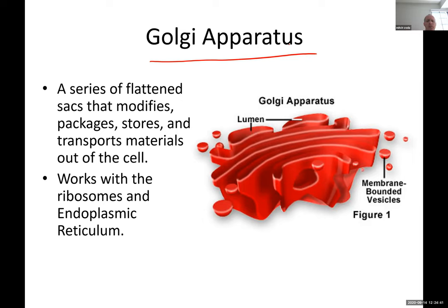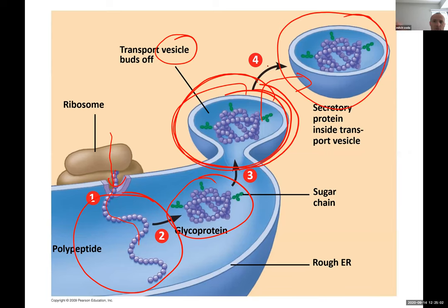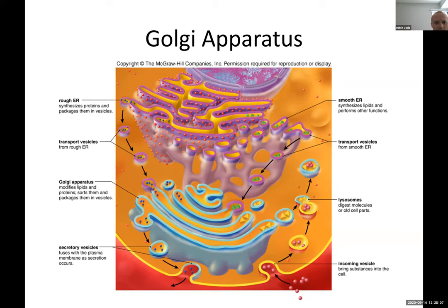The Golgi apparatus modifies, packages, stores, and eventually transports materials outside the cell. The vesicle that comes from the endoplasmic reticulum comes to the Golgi and fuses with it.